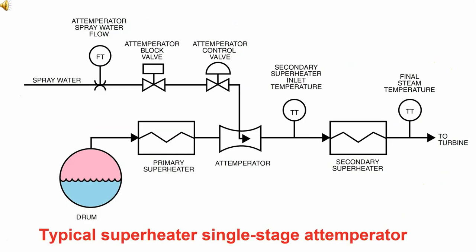Here again we describe the passage of steam to the turbine, including the instrumentation. The steam goes to the primary superheater, then to the temperator, where spray water is controlled with a temperator control valve. Then the steam goes to the secondary superheater and ultimately to the turbine.